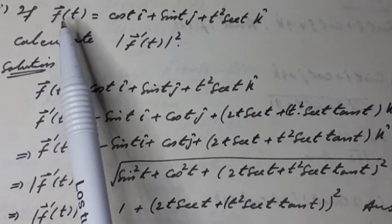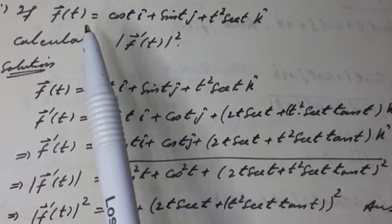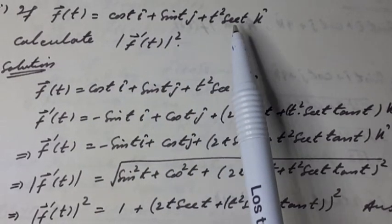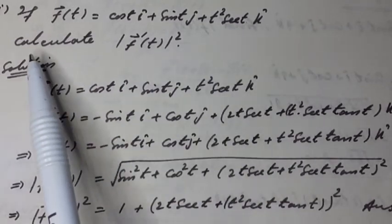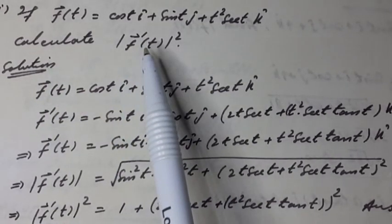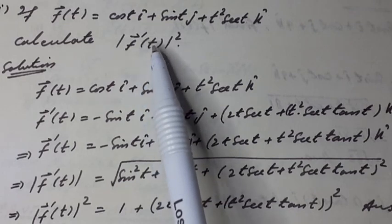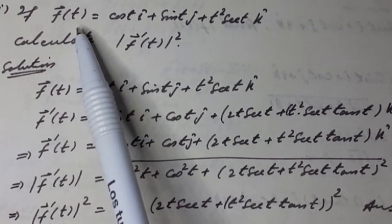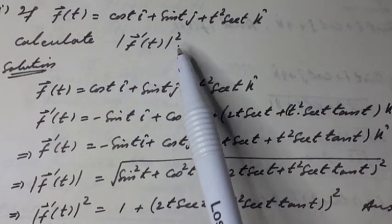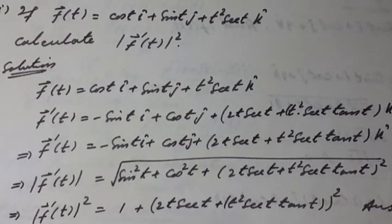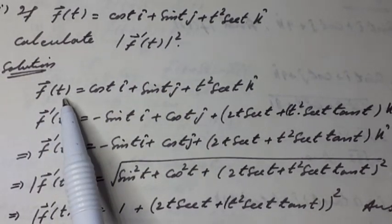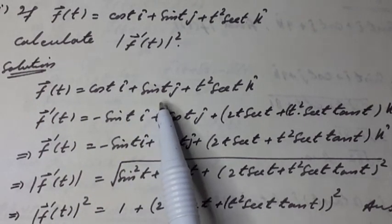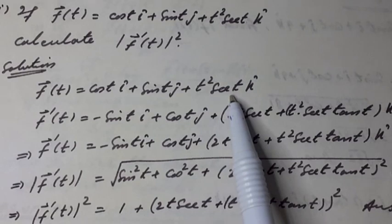Vector function f of scalar variable t is equal to cos(t) î + sin(t) ĵ + t² sec(t) k̂. Calculate f'(t), which denotes the derivative of the vector function of scalar variable t, and its magnitude squared. Solution: the vector function f(t) = cos(t) î + sin(t) ĵ + t² sec(t) k̂.